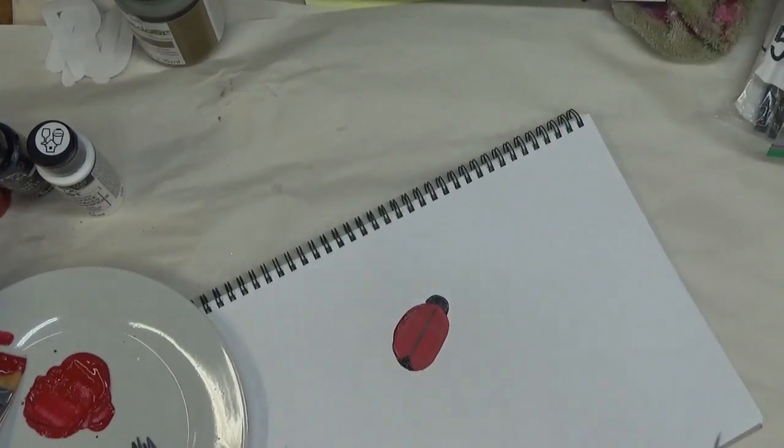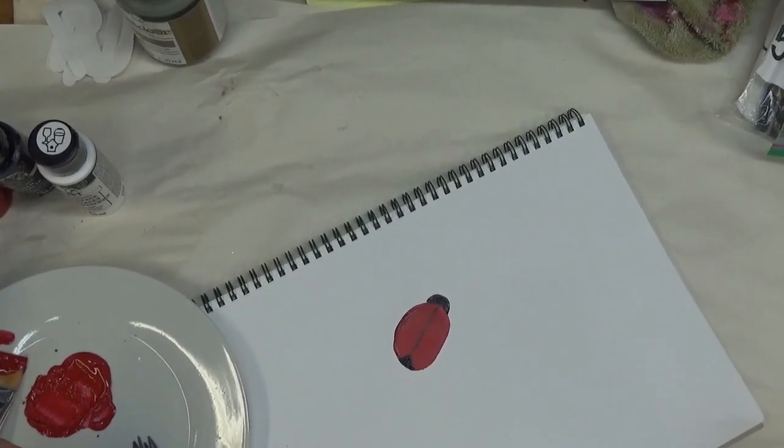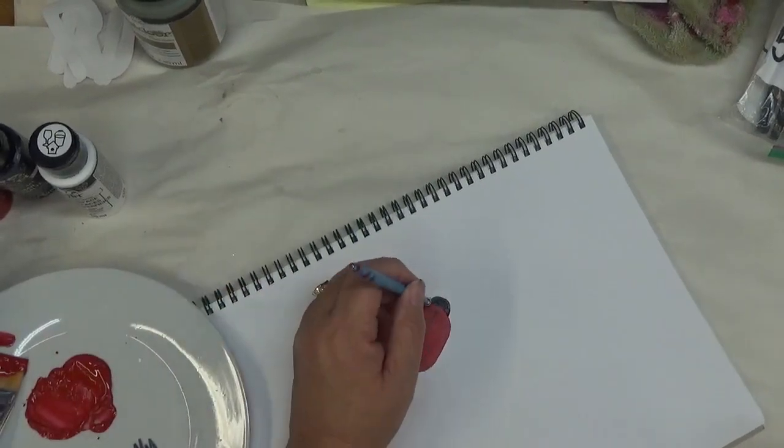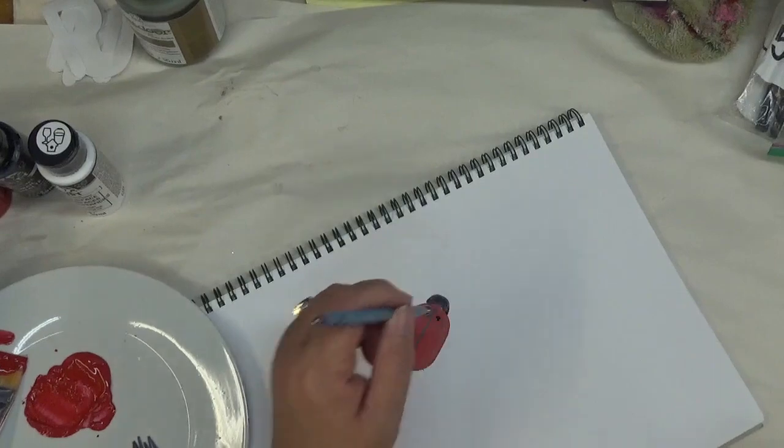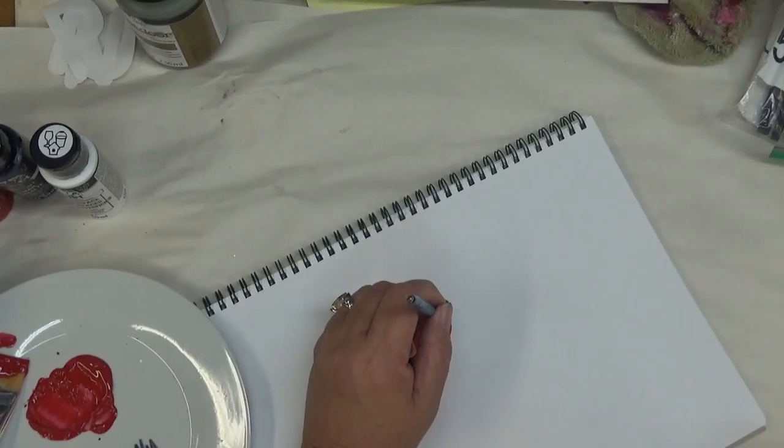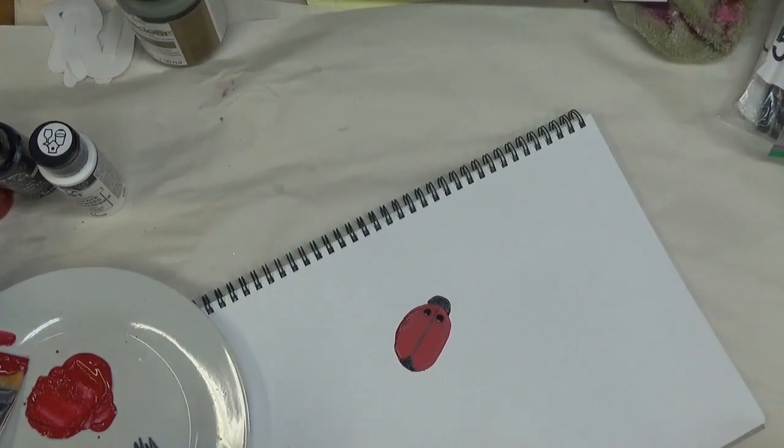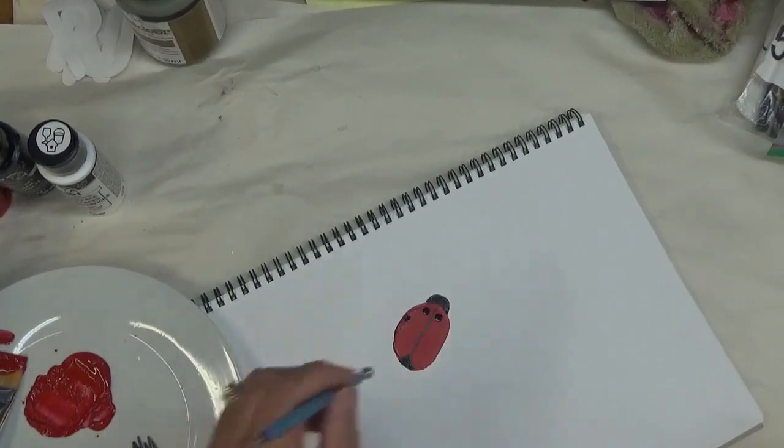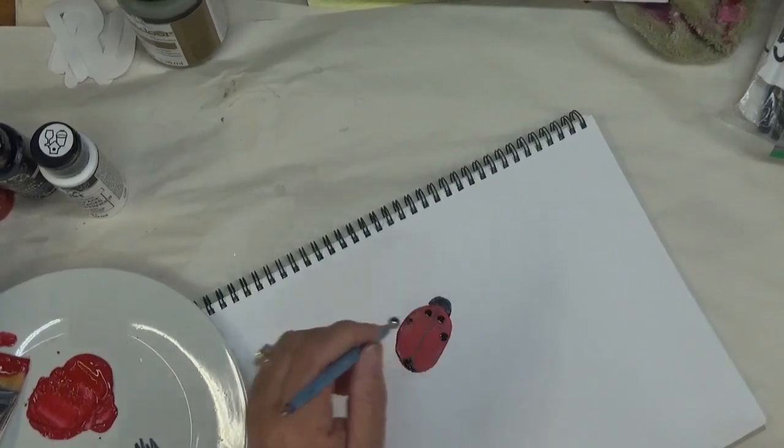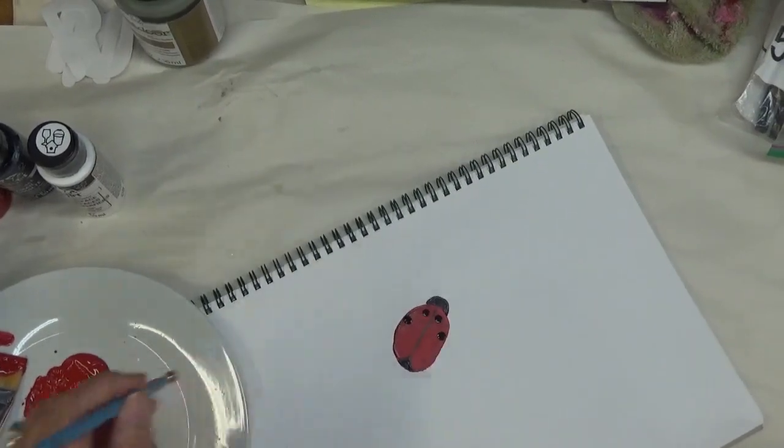Because I made it a little bit bigger than I did my sample, I'm going to use the bigger end and I'm going to tap in the dots. I'm going to start up here and tap them in, and I want them to be similar in size, so I'm going to make sure that I do that as much as possible.